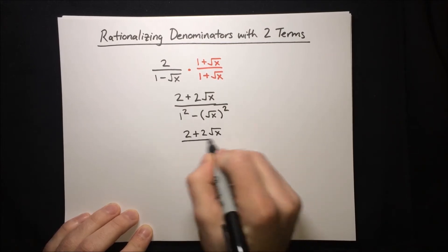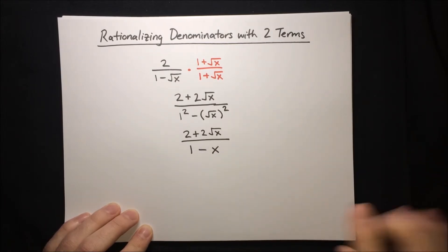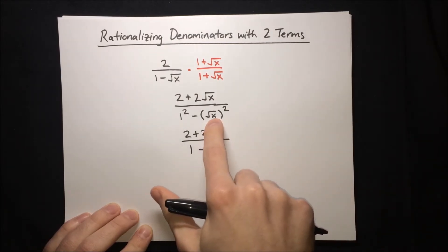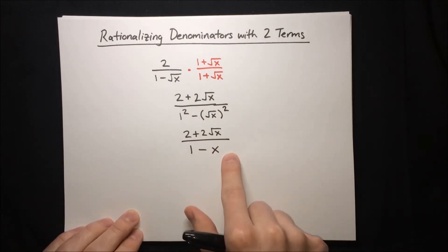We'll simplify a bit more. So that's 2 plus 2 root x over 1 minus x, and there we have it. Squaring the root caused it to go away, and we have a fraction without any roots in the denominator.